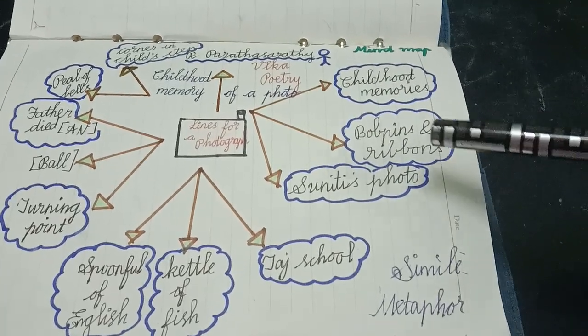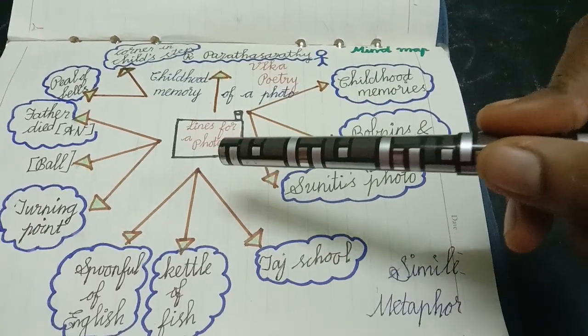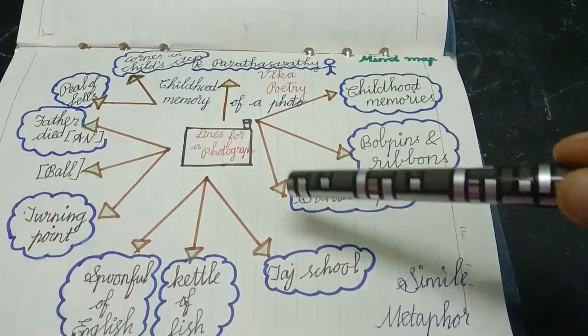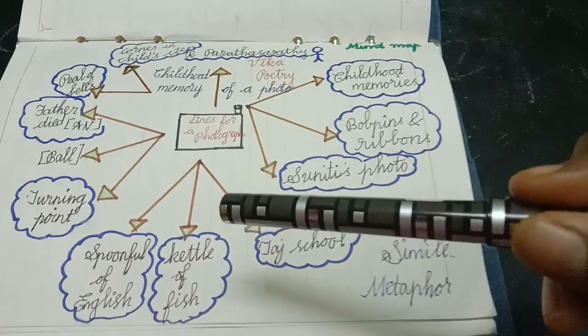In the poem, the photograph has shown a girl, Suniti, and it's Suniti's photo. The school they learned is that school looks like a kettle of fish.